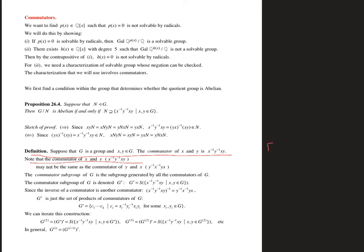Sometimes you see this with bracket notation — [x, y] — and it's going to be x inverse y inverse x y. We're going to use these commutators to figure out what happens with our solvable groups.